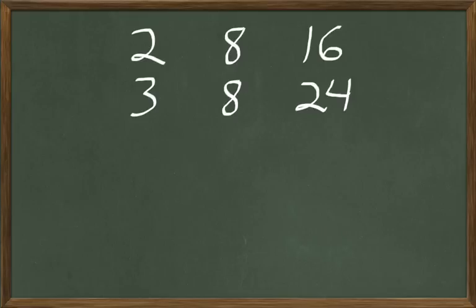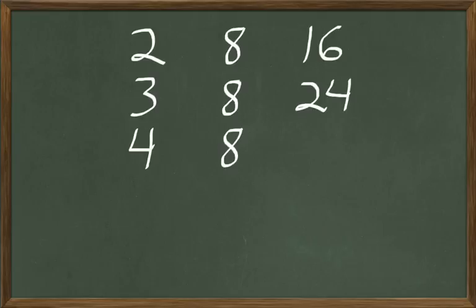In the next problem, Nancy has 4 hens and each hen has 8 chickens. So how many chickens are there in the whole chicken coop? She's got 4 hens and each hen has 8 chickens, so we're going to multiply 4 times 8 — there are 4 hens and each hen has 8 chickens. 4 times 8 are 32.